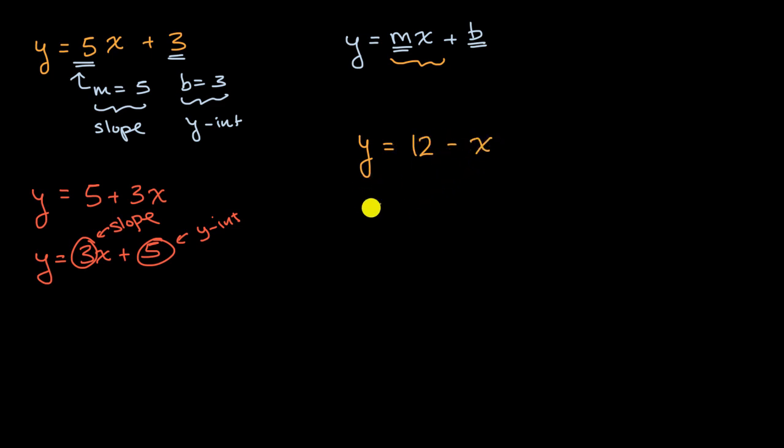So we might want to do that over here. So we could rewrite this as y is equal to negative x plus 12. And so from this, you might immediately recognize, okay, my constant term, when it's in this form, that's my b, that is my y-intercept. So that's my y-intercept right over there.